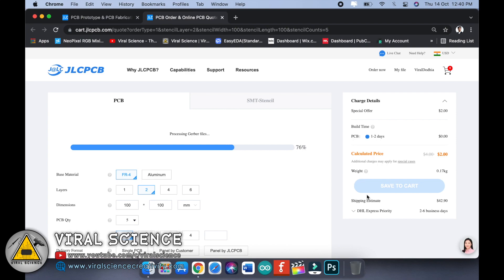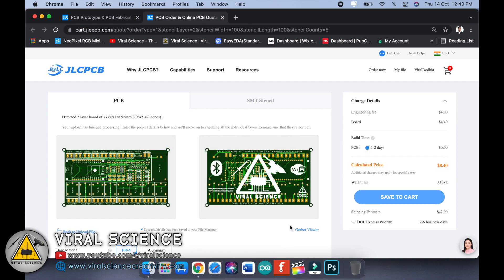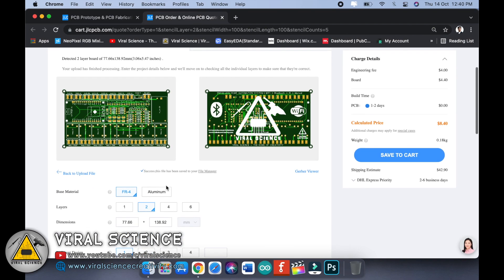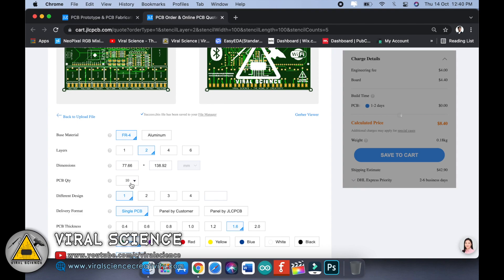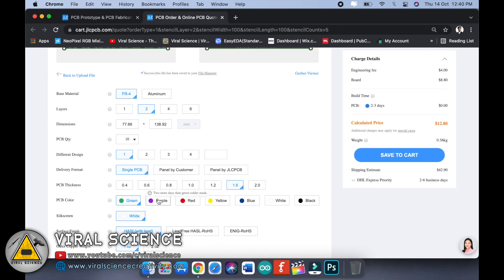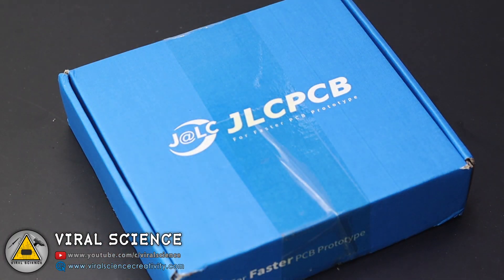After uploading this PCB file, select the quantity you want and select the color of your PCB board. After selecting the quantity and color, select save to cart and place your order.